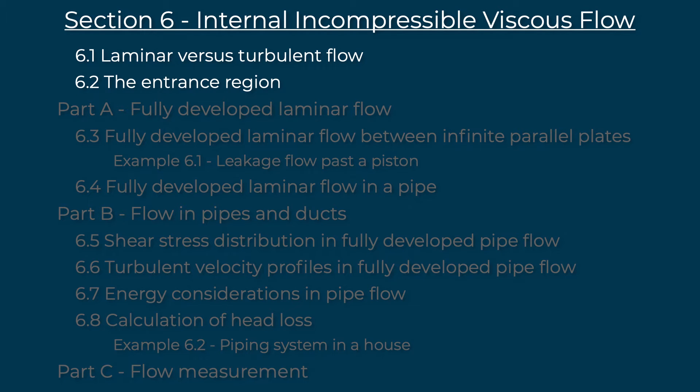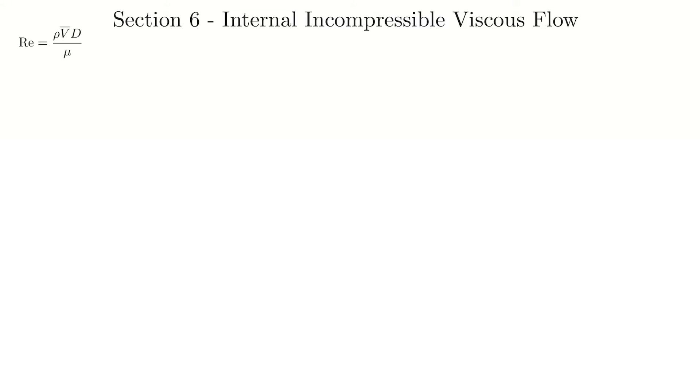In section 7, we're going to look at what are called external flows — flows over objects. In this video, I'm going to be starting the flow through pipe section. We're going to talk about what we expect to learn in this section and also some of the basic things we need to know to talk about flows through pipes. Here's the breakdown of section 6. We'll be covering the text in white. The title is: internal incompressible viscous flow.